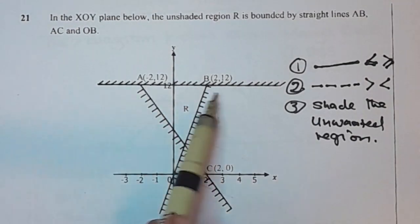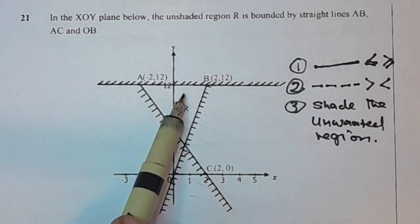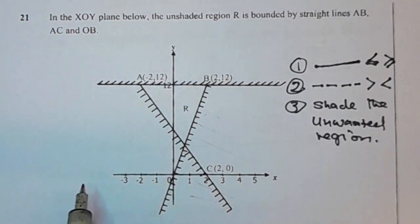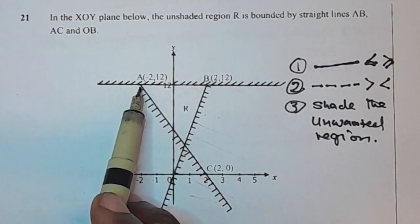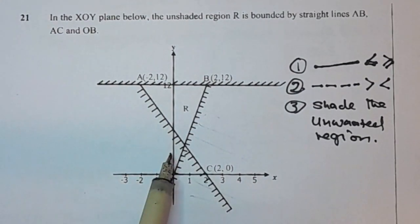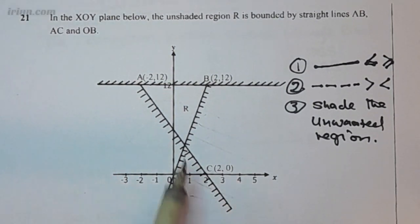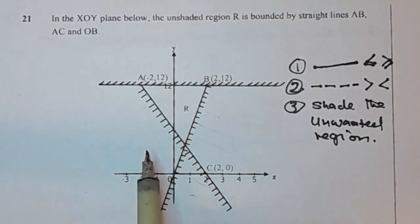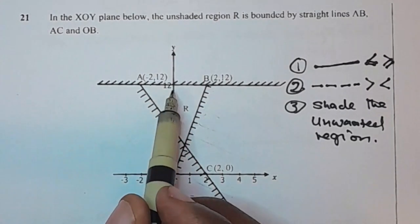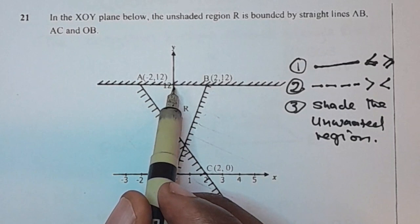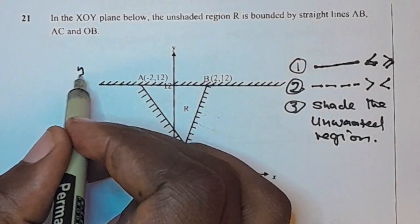So we have three lines defining region R. Before you start answering, look for the line with the easiest equation. When you look at lines crossing both the x and y axis, they require formulas. But this one is only crossing the y-axis, so it has the easiest equation. You just look at where this line crosses — it's crossing at 12, so the equation is y equals 12.